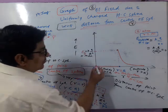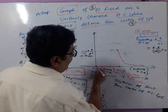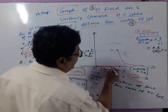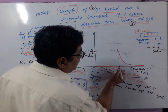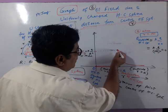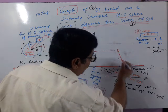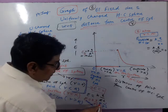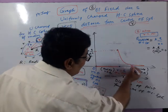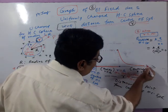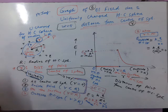Finally, what is the graph? Inside and at the center, the electric field is zero. Exactly on the surface, it reaches its maxima. And outside, it follows an inverse r-squared relationship, decreasing and running parallel to the axis toward zero at infinity.